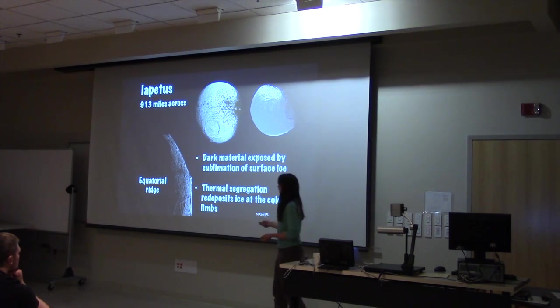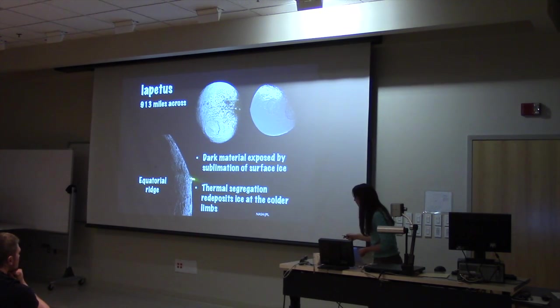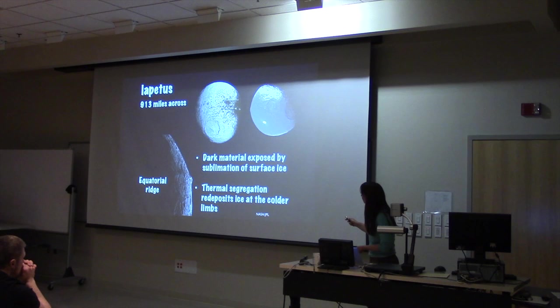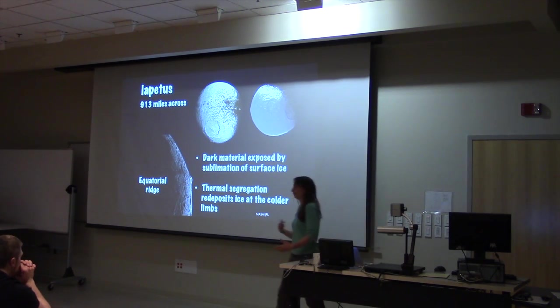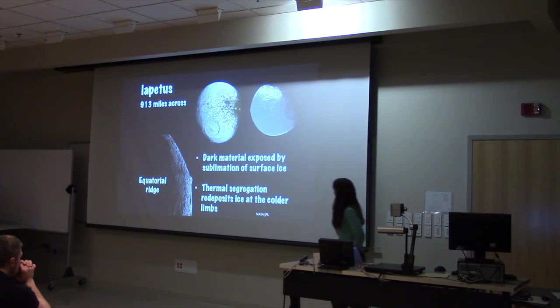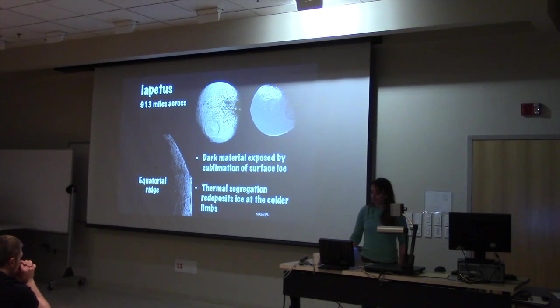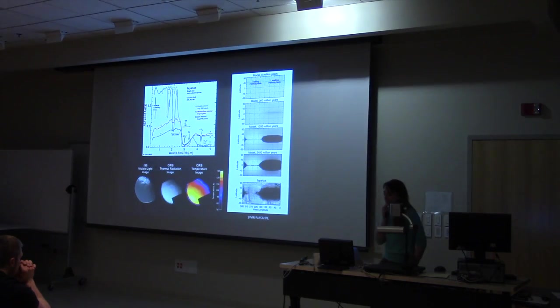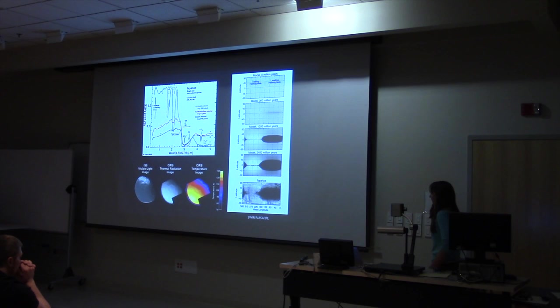Another cool thing about Iapetus is it has kind of a crazy mountain range, this equatorial ridge. As you can kind of see here, it's about 10 kilometers tall, about 6 miles. It's hard to see there, but it goes all the way across the equator. We don't really know what causes that mountain range. People have a few theories, maybe a collapsed ring that Iapetus had. But it's kind of a cool feature of the moon.